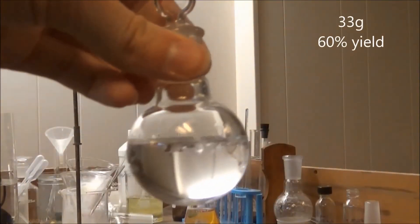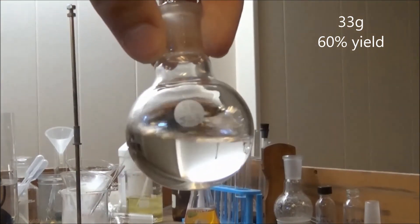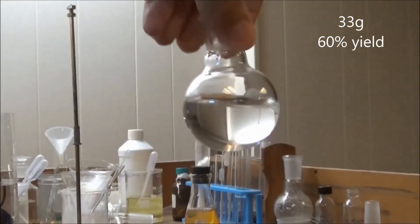The yield was 33 grams of pure cyclopentanone. This represents a 60% yield. Not too bad considering how much adipic acid was left in the flask from stopping too early.